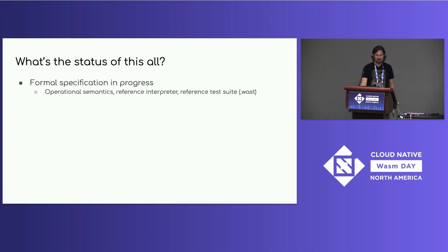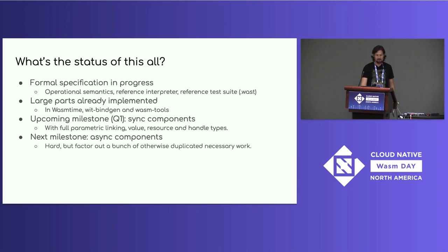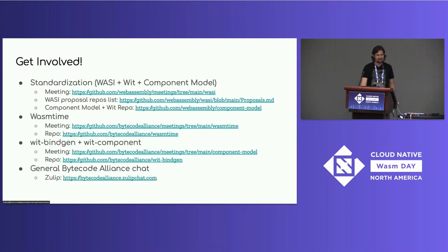What's the status of all this? There's a formal specification in progress with an operational semantics, reference interpreter, and reference test suite. Large parts are already implemented in Wasmtime with bindgen and WASM tools. There's an upcoming milestone called sync components with full parametric linking, value, resource, and handle types, aimed for Q1. After that, the big milestone is adding futures and streams — async support to the component model — which is going to be hard but will factor out otherwise duplicated necessary work. Then some final bits to close out a component model MVP, for example optional imports and exports. Here are links to get involved in the standards with regular meetings, proposals to track, Wasmtime and witbindgen tooling, and the Bytecode Alliance Zulip chat. Thanks a lot.